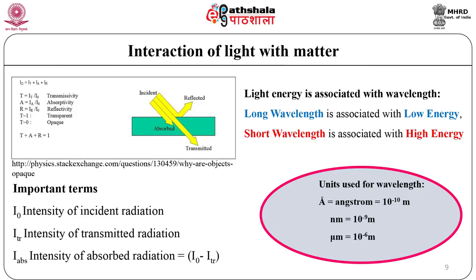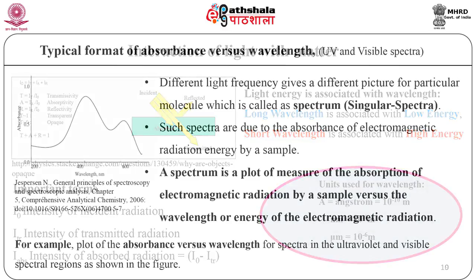Angstrom is the unit used for wavelength and is equal to 10 raised to minus 10 meters. Interaction of light with matter causes light to change its direction. Light energy is associated with wavelength — long wavelength is associated with low energy and short wavelength is associated with high energy. In spectroscopy, different light frequencies give a different picture from a particular molecule, called a spectrum. Such spectra arise due to the absorbance of electromagnetic radiation energy by a sample.